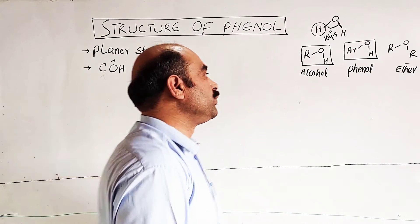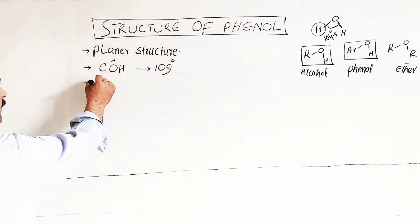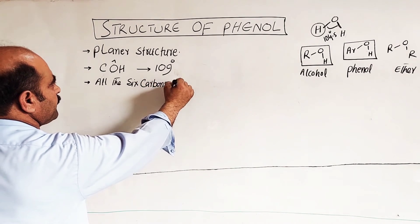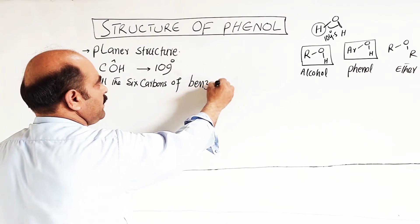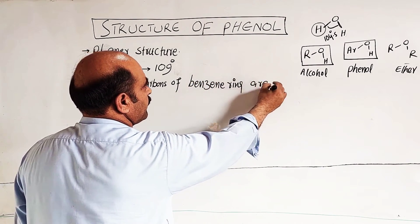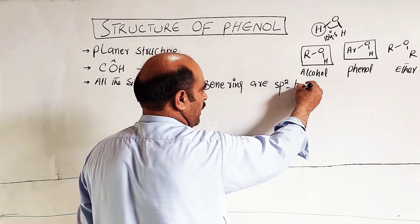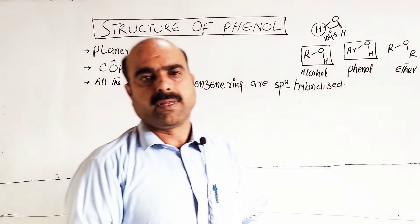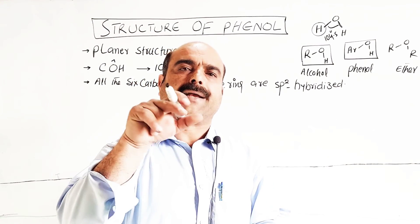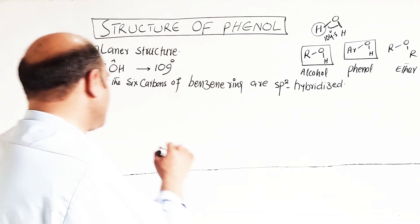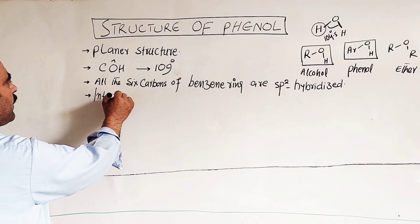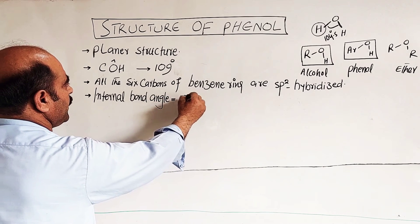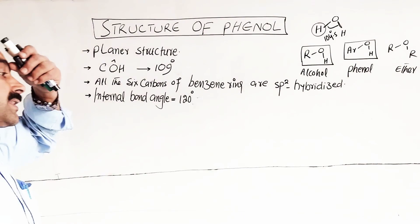All six carbons of the benzene ring are SP2 hybridized. Because all the carbons of the benzene ring are SP2 hybridized, the internal bond angle within the benzene ring is 120 degrees.